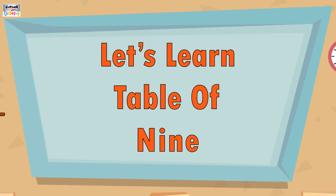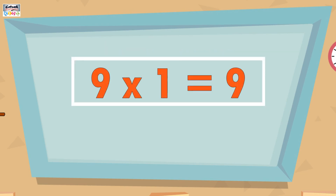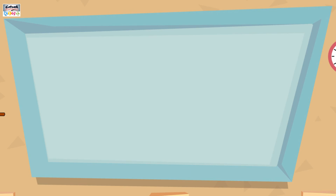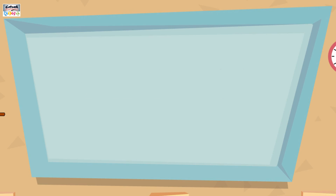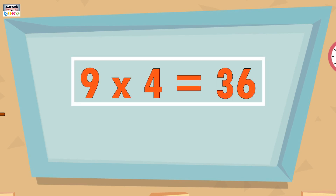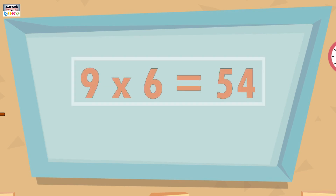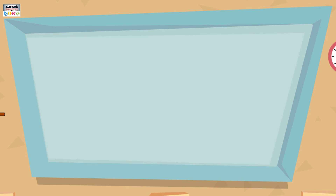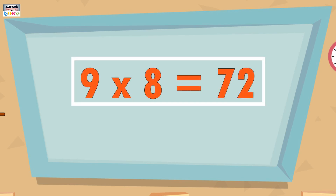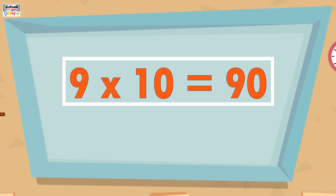Let's learn the table of 9. 9 ones are 9, 9 twos are 18, 9 threes are 27, 9 fours are 36, 9 fives are 45, 9 sixes are 54, 9 sevens are 63, 9 eights are 72, 9 nines are 81, 9 tens are 90.